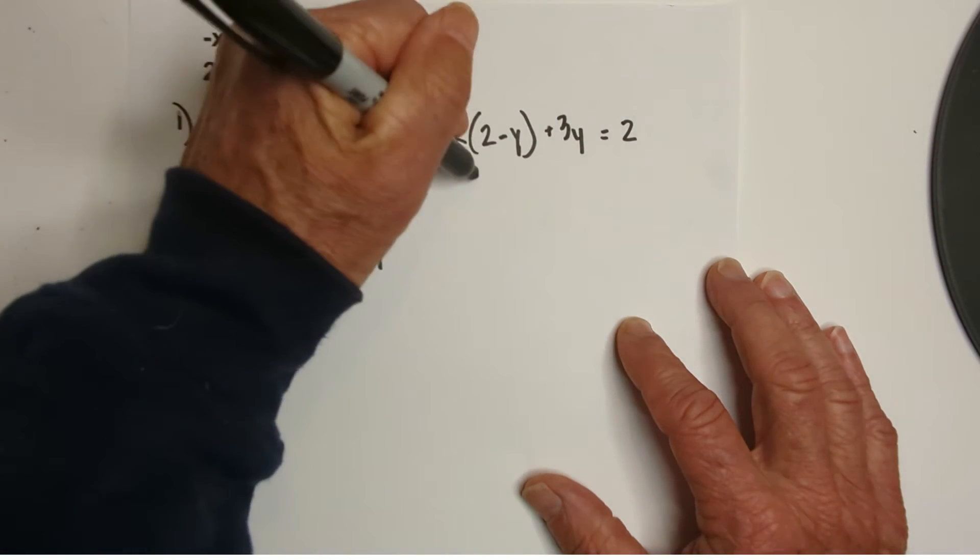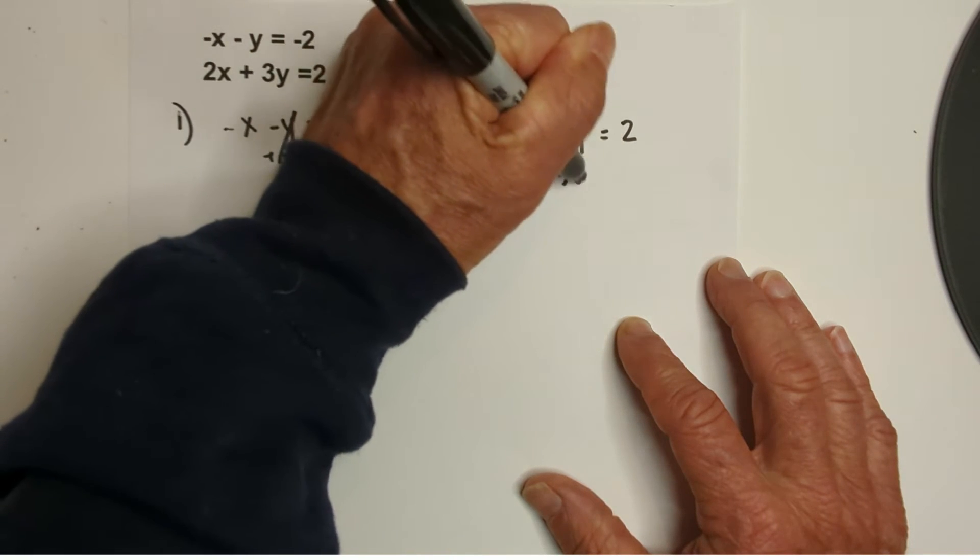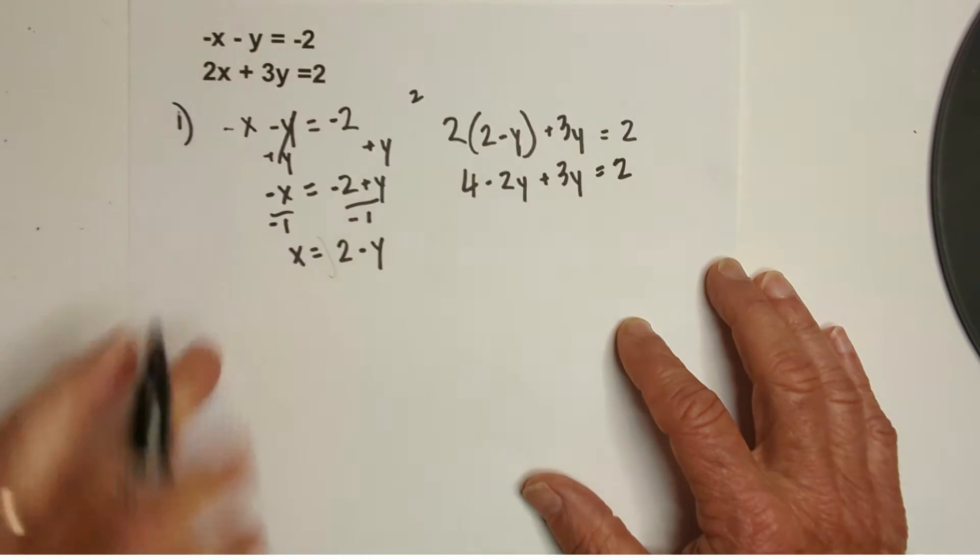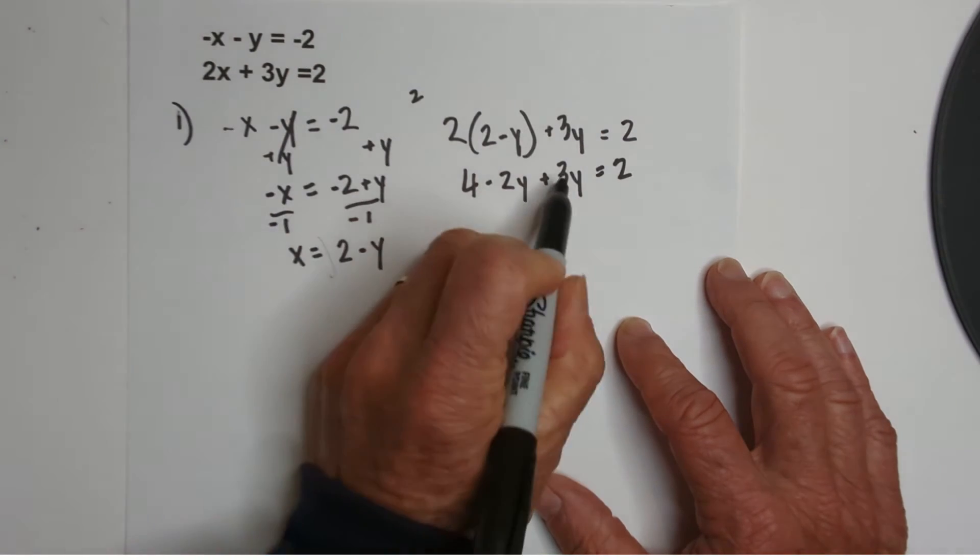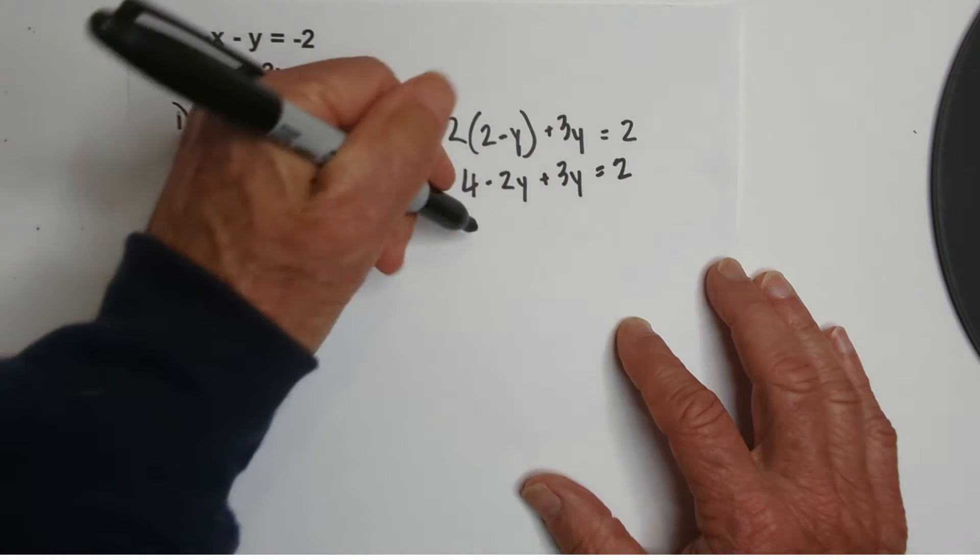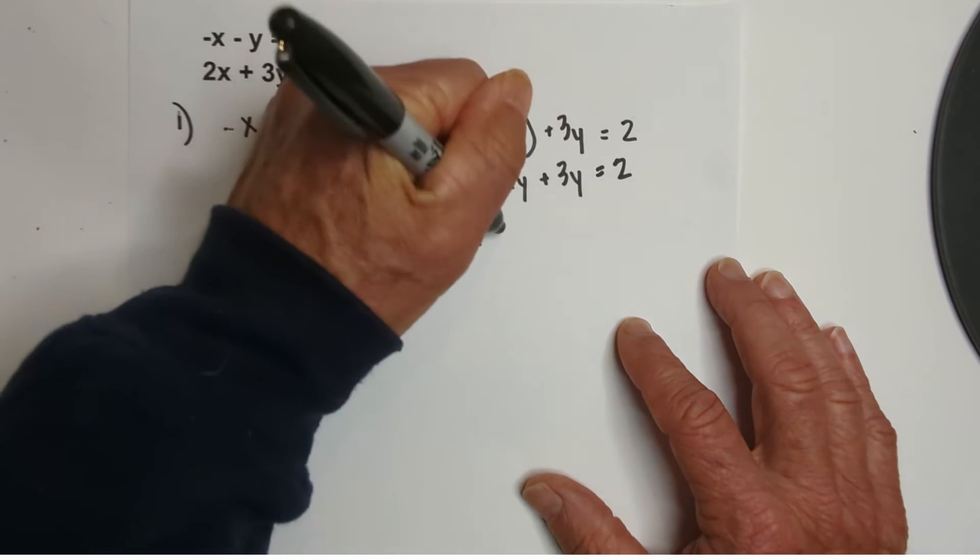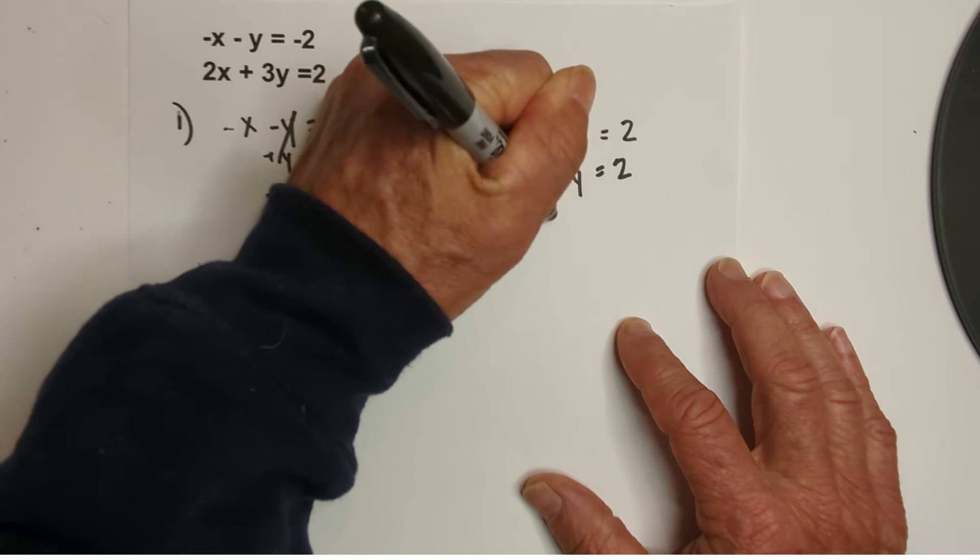So, now I'm going to distribute. So, we have 4 - 2y + 3y = 2. Now, I can combine like terms. So, when I do that, I have 4 and a -2y and a positive y equals +y equals 2.